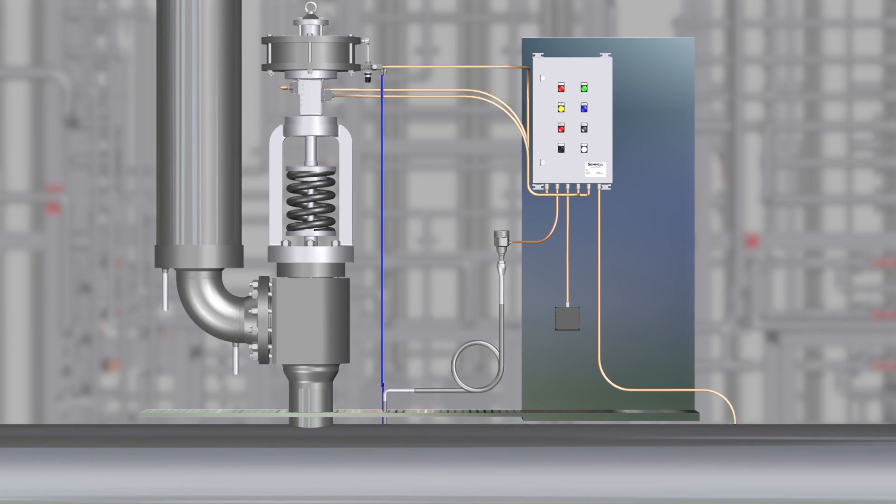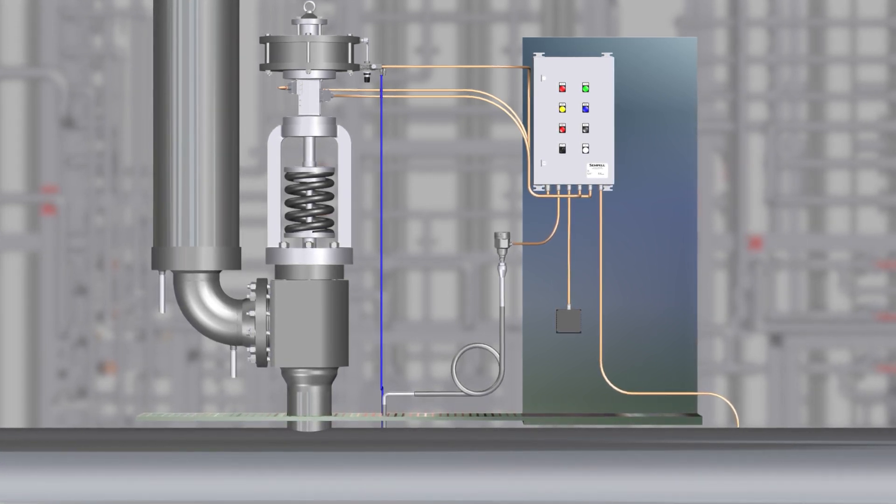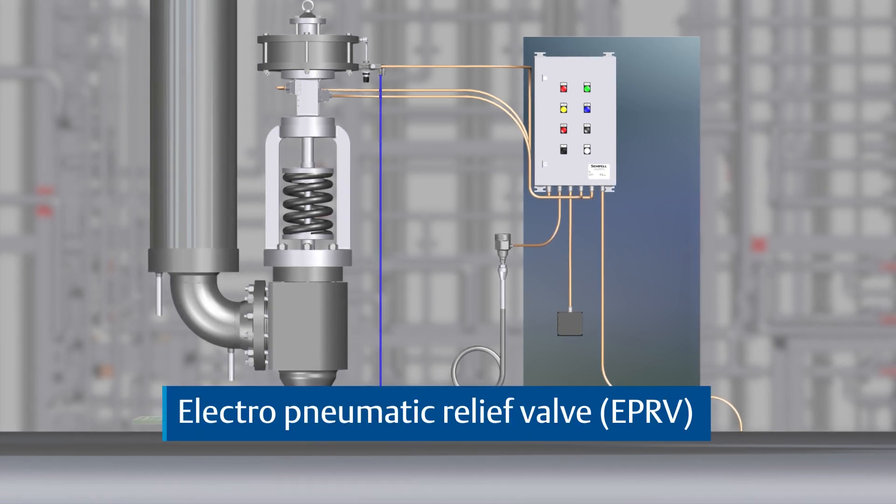Emerson can provide the full range of overpressure protection for power plants by additionally using our power-actuated relief valve, the Electro Pneumatic Relief Valve, or EPRV.